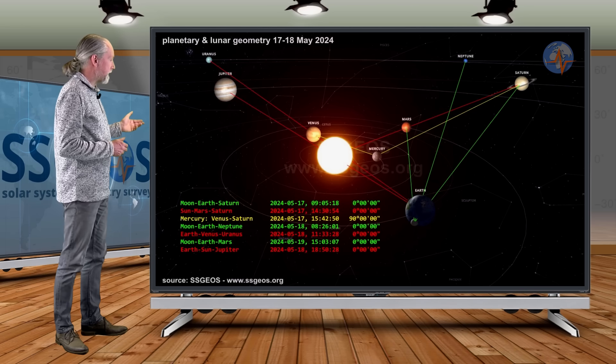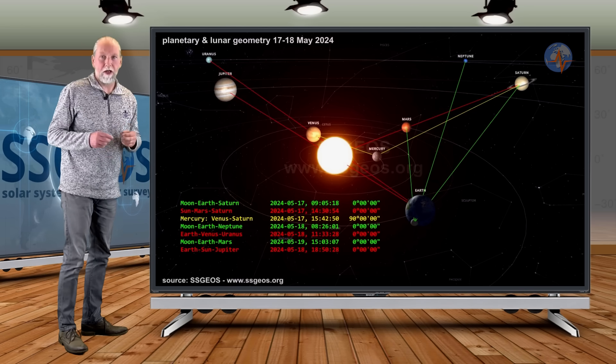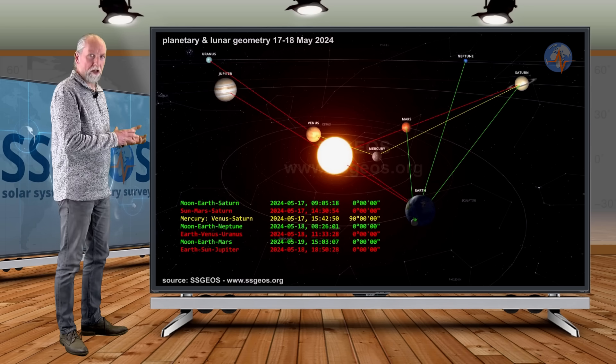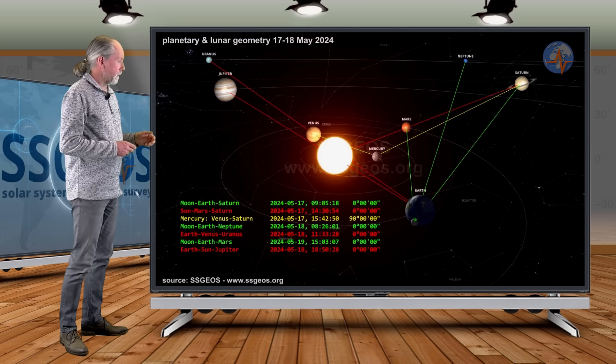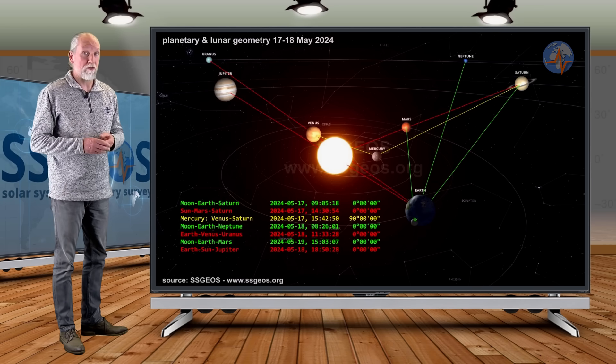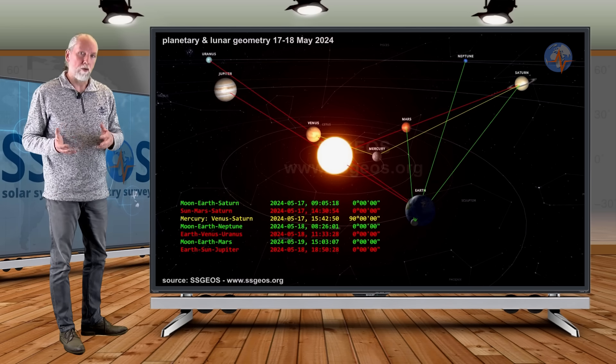As you can see on 17, 18 and 19 May, we also have some significant lunar conjunctions converging with the planetary convergence here, planetary geometry. So we may see an obvious seismic increase. And again, it may actually reach magnitude seven following that planetary lunar geometry.